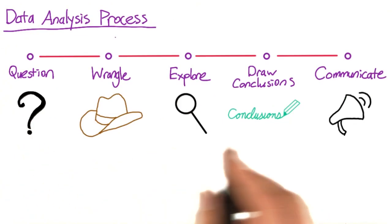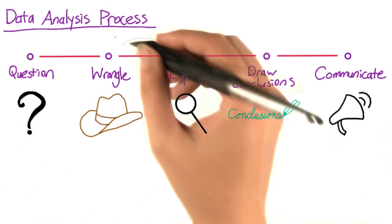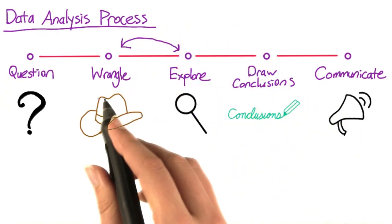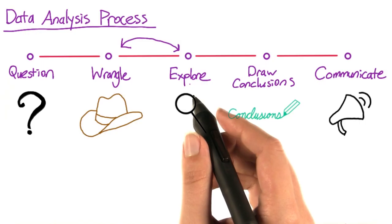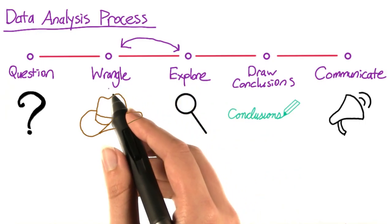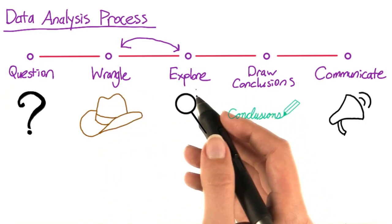Now this process doesn't actually follow a straight line. Especially the data wrangling phase and the data exploration phase are very intertwined because you can't really clean any problems with the data before you take a look to see what problems there are.